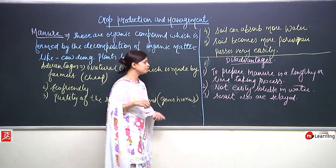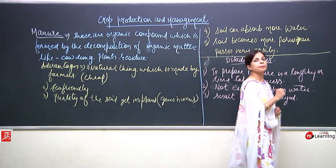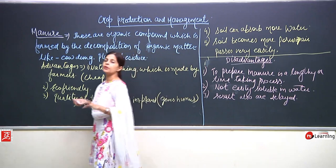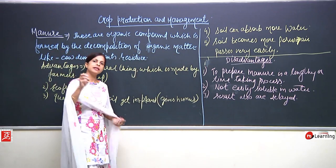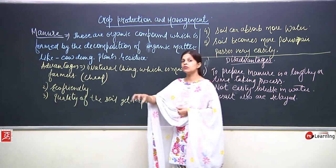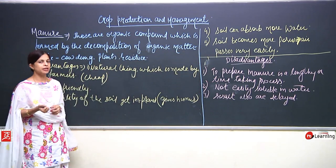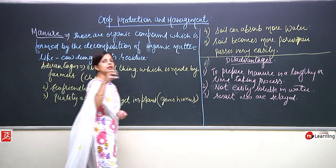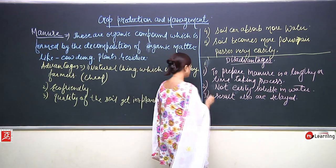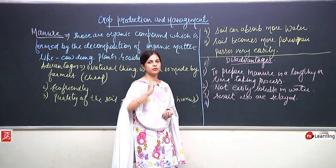At the same time, if we know that a particular land is deficient in nitrogen or some specific nutrient and we want to give the soil that particular nutrient only, we cannot do that with manure. Manure is not nutrient-specific — it gives overall nutrients to the soil and overall improves the quality of the soil. It provides humus to the soil and also increases healthy microbes.